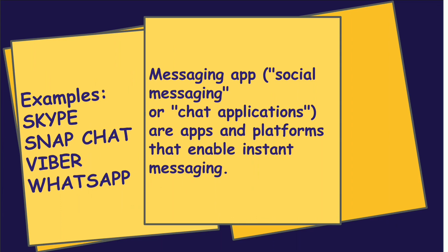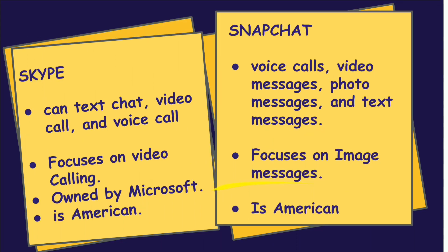For example, Skype, Snapchat, Viber, WhatsApp, etc. We can call these messaging apps, otherwise social messaging apps or chat apps. These chat applications are the platforms that enable us to do instant messaging. Let's discuss about Skype and Snapchat first.